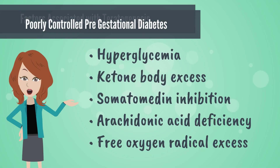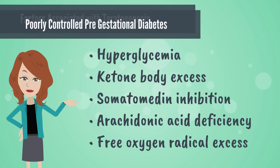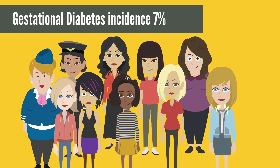Metabolic alterations in poorly controlled diabetes in pregnancy, specifically during embryogenesis, are associated with teratogenesis. These metabolic alterations include hyperglycemia, ketone body excess, somatomedin inhibition, arachidonic acid deficiency, and free oxygen radical excess. Gestational diabetes, or diabetes whose onset was during pregnancy, complicates 7% of all pregnancies.